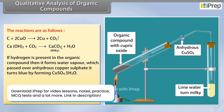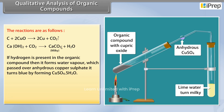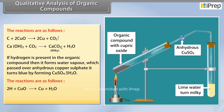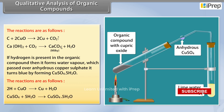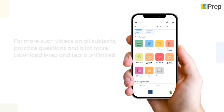If hydrogen is present in the organic compound, it forms water vapor, which passed over anhydrous copper sulfate turns it blue by forming CuSO₄·5H₂O. The reactions are as follows: hydrogen in the organic compound reacts with copper(II) oxide and produces copper and water. The produced water reacts with anhydrous copper sulfate, which turns blue by forming CuSO₄·5H₂O.